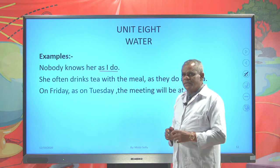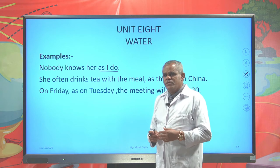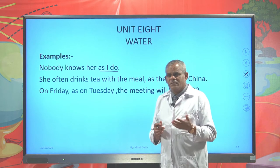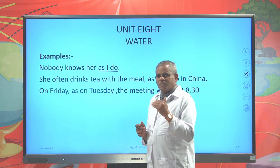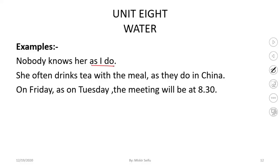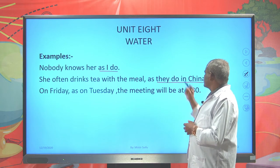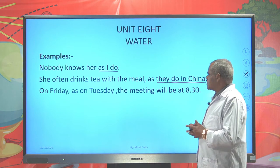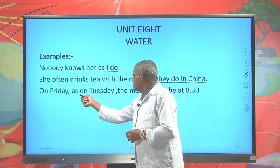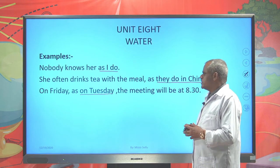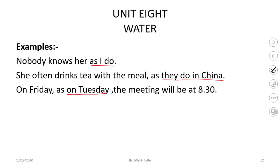What makes it a clause? There is a subject 'I' and a verb 'do.' As may show different purposes — to express purpose, to express function, or to express the position of something. For instance: 'She often drinks tea with me, as I do in China.' That is still functioning as a clause. Also: 'On Friday, as on Tuesday, the meeting will be at 8:30.' The function of as here is used as a conjunction.